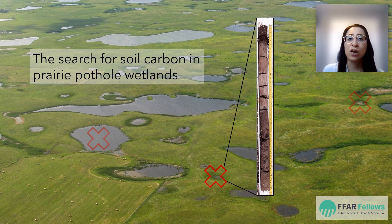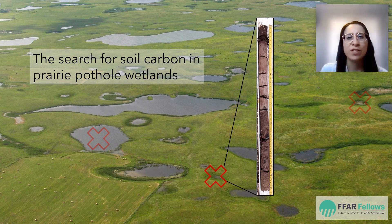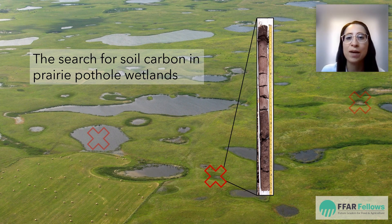This carbon would otherwise be carbon dioxide in the atmosphere if it wasn't locked away in the soil. Some wetlands hold more soil carbon than others though, so my next steps to improve this soil carbon treasure map is to see how the amount of soil carbon is impacted by the climate, the amount of water in the wetland pond, as well as wetland drainage.